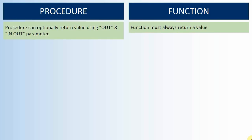The primary difference is that a function should return a value and we cannot omit this. A function should have a return value, and to return information from a function we'll be using the return keyword. That is the reason a function can return only one value — whether it's a scalar value or a composite value, we can return only one value from a function.